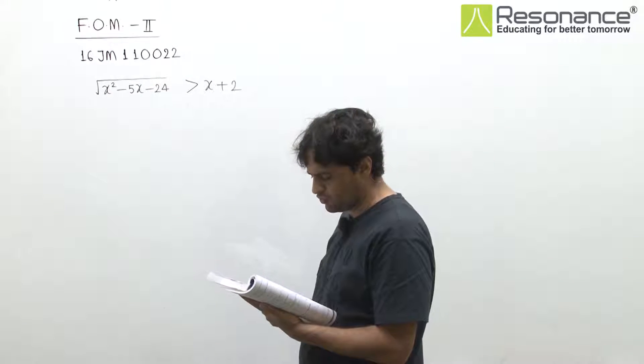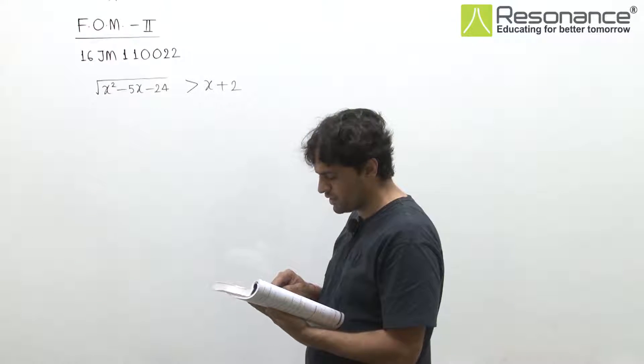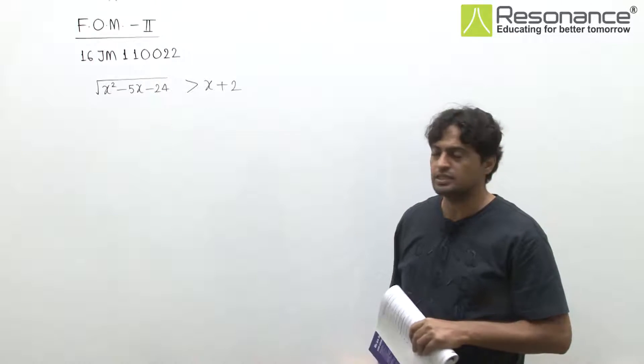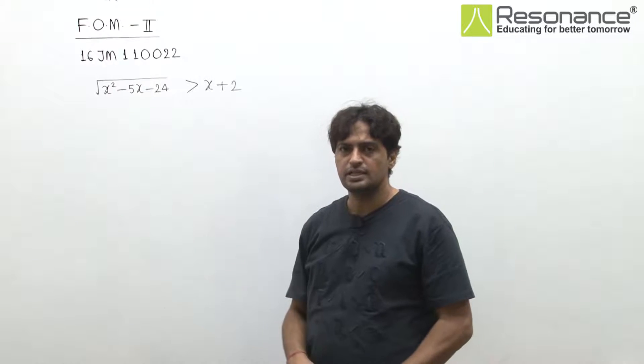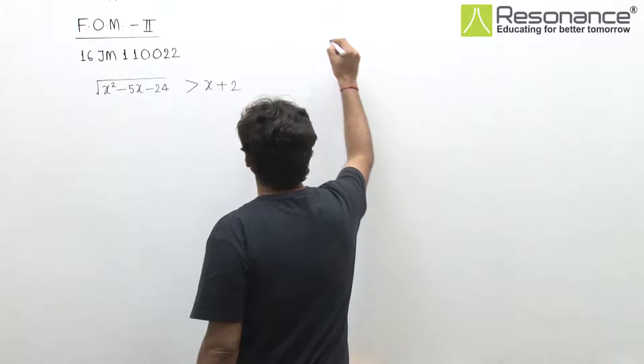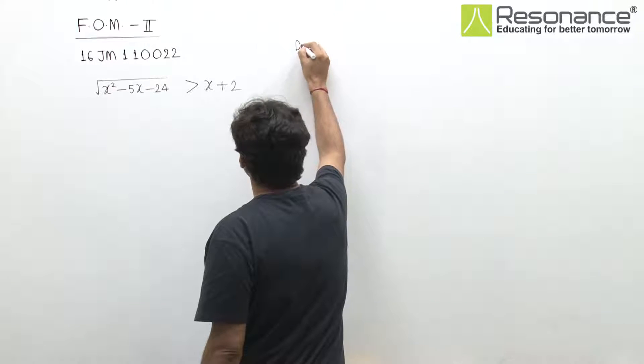In this question we have to find the set of all real values of x satisfying this inequality. There is an irrational term with a square root, so first we check when it is defined and meaningful. So we write the domain.